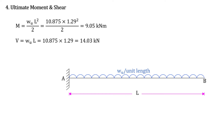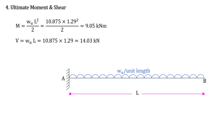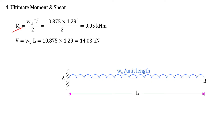Now we are going to find the ultimate moment and shear force. When a cantilever beam is subjected to uniformly distributed load for the full span, the maximum moment occurs at support A, and the formula is Wu into L square upon 2. The maximum shear force also occurs at support A, and the formula is Wu into L. Wu we have already calculated; L is the effective span, 1.29 meter. For the moment we will get 9.05 kilonewton meter, and for the shear we will get 14.03 kilonewton.